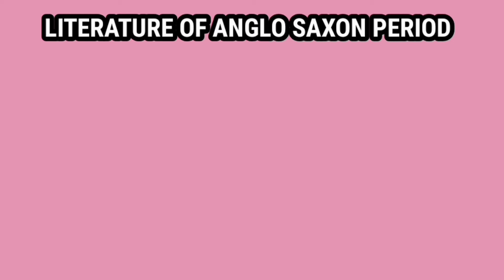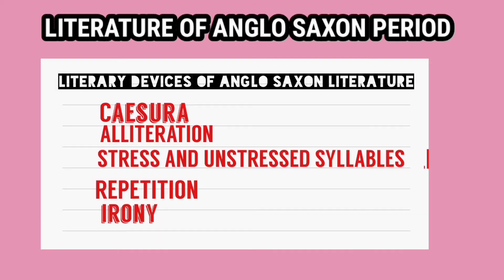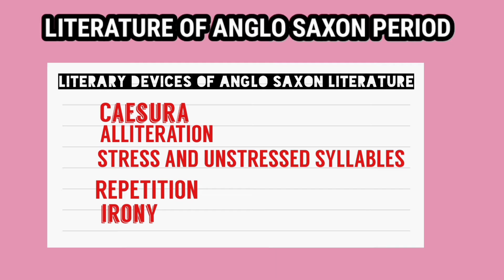Anglo-Saxon دور میں جو literary devices استعمال ہوتے تھے ان میں alliteration بہت اہم تھا — stressed اور unstressed syllables میں لکھا جاتا تھا، بغیر rhyme scheme کے۔ Irony، metaphor اور metonymy بھی استعمال ہوتے تھے۔ Repetition بھی کی جاتی تھی کیونکہ dominating genre poetry تھی — alliteration، irony وغیرہ poetry کی خصوصیات تھیں۔